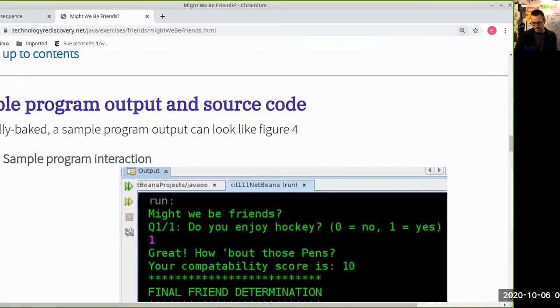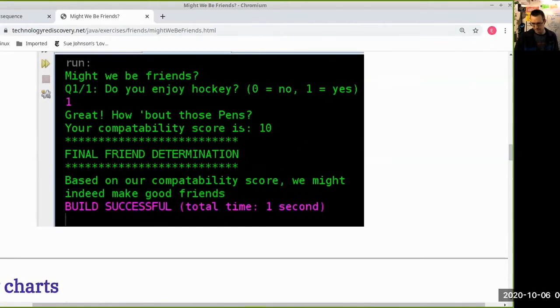So this person asks, do you like hockey? And then you give the user a zero or a one choice. You scan in the integer they type and then you implement your logic. At the very end, you do your determination based on your compatibility score and give the user a departing greeting.